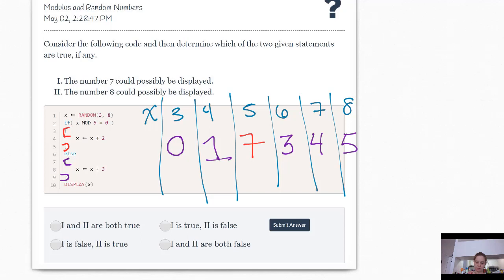So the number 7, let's check, could possibly be displayed. Yes, it's displayed when X is 5. The number 8 could possibly be displayed. Nope. And none of our choices did we get X to be 8. So only 1 is true. So 1 is true and 2 is false.